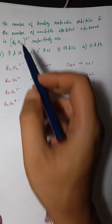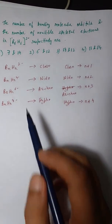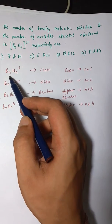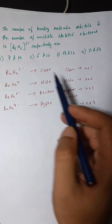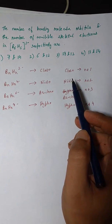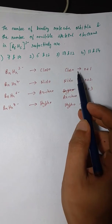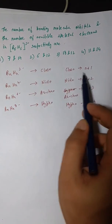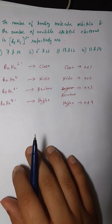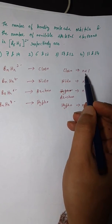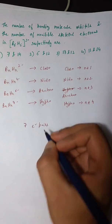Since B6H6 2− has six boron atoms and fits the form BₙHₙ²⁻, it is a Closo structure. The number of skeletal electron pairs for Closo is N+1, and N here is 6, so 6+1 = 7 skeletal electron pairs.